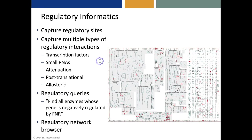There are also a variety of regulatory informatics tools that let us capture regulatory sites and multiple types of regulatory interactions. There are regulatory queries and a regulatory network browser. Here we've performed a regulatory query in the E. coli database to find all enzymes highlighted in red whose gene is negatively regulated by FNR.